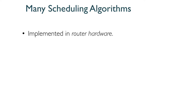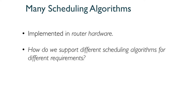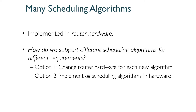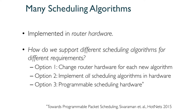All of these scheduling algorithms are implemented in router hardware. So how do we support different scheduling algorithms for different requirements? One option is to change all router hardware when requirements change — difficult given network scale. A second option is to implement all algorithms in hardware, but that is expensive and adding new algorithms still requires hardware changes. A third option is programmable scheduling, but that requires programmable hardware in every router that does not exist yet.